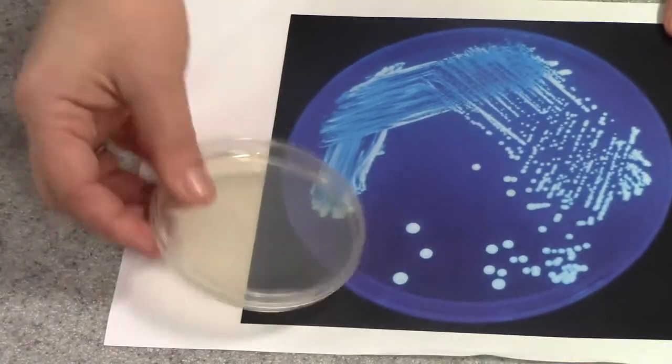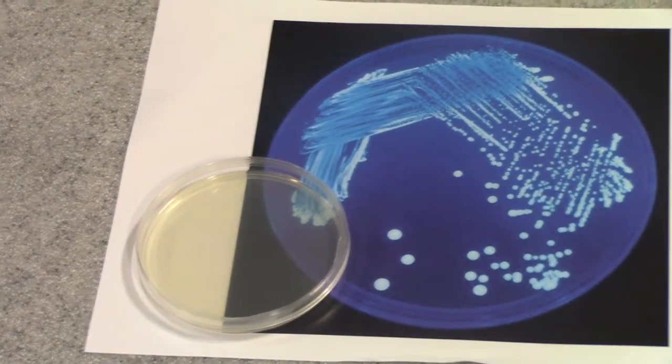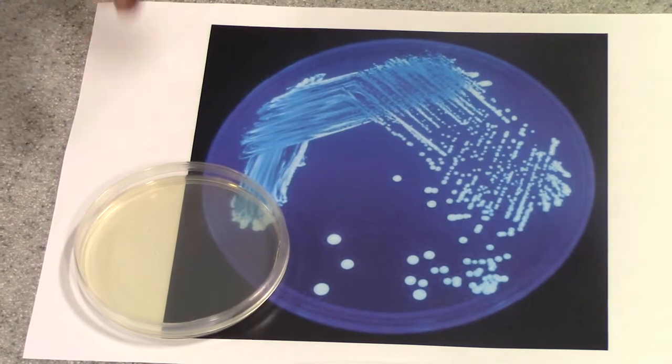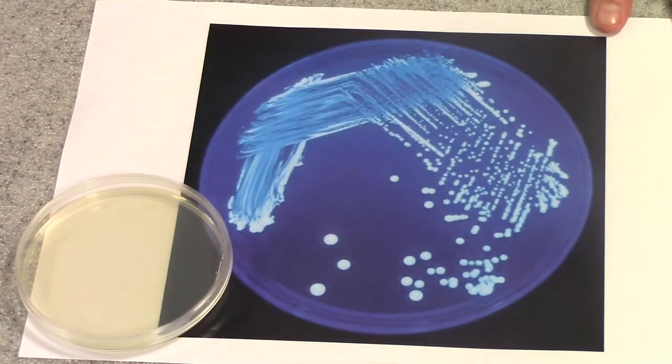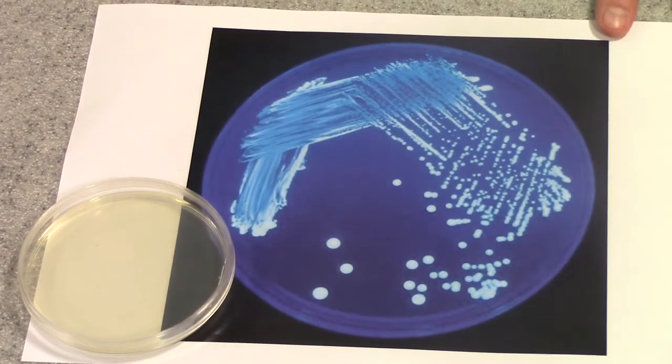The agar petri dish should now be incubated in an oven at 20 degrees for around 48 hours, and after that time, it should be possible to observe the individual colonies, which can help you to identify the bacteria you're looking at.